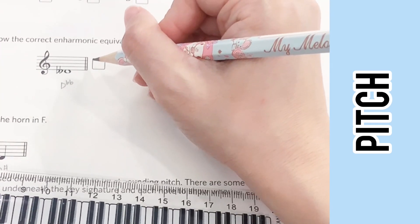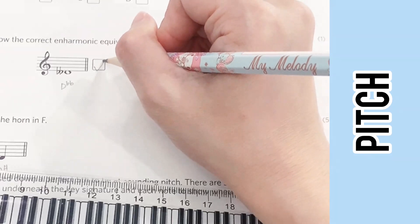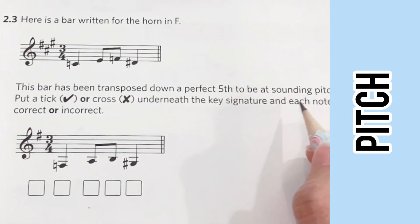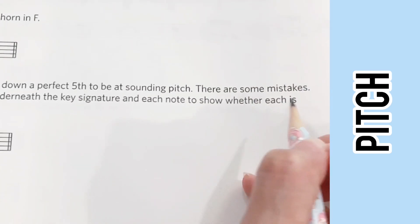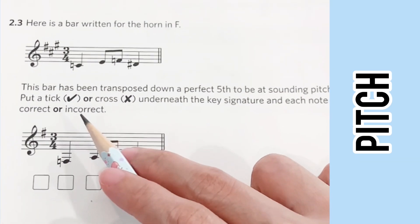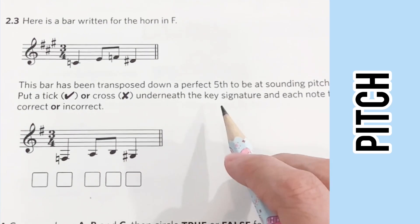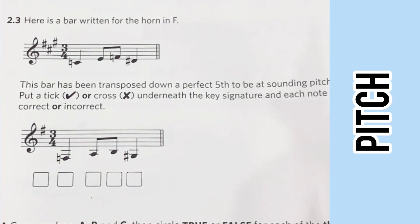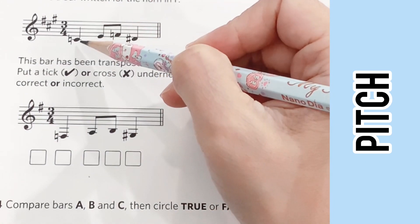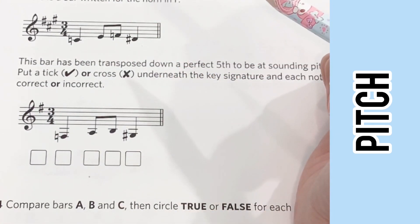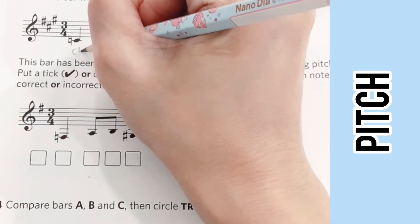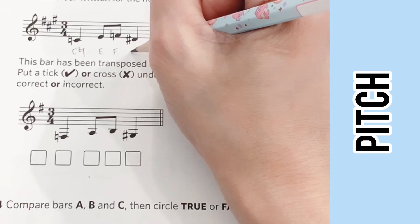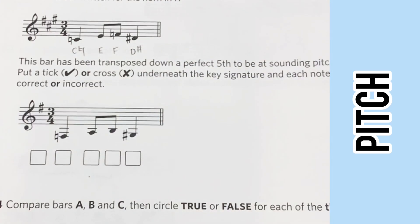For the next question, the notes below are transposed a fifth lower, and we're supposed to determine if the key signatures and the notes are transposed correctly. Let's write down the letter names for each of the notes here. The first note is C natural, followed by E, F natural, and D sharp.